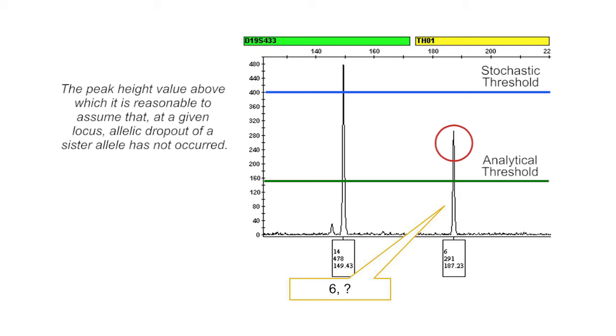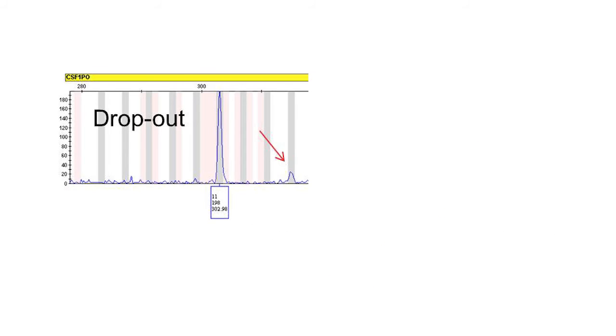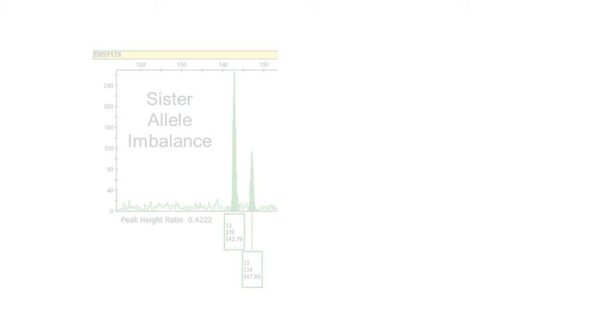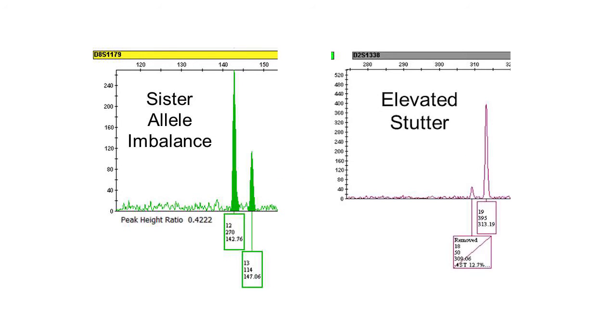Conversely, you may not have much confidence that a single peak below the stochastic threshold is a true homozygote. Examples of stochastic effects are allele dropout, allele drop-in, sister allele imbalance, and elevated stutter. These effects occur more frequently in low-level DNA samples.